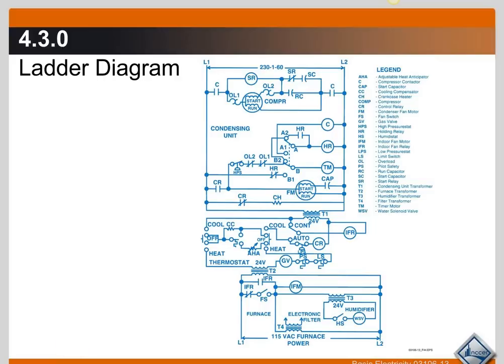If you look at this top portion up here you have L1 and L2 coming in. That's usually the legs of your ladder are the power legs. And then each load and all of its control devices are the rungs of the ladder.